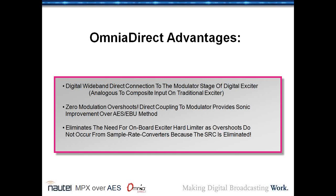Most of our customers would keep the multiplex signal in the Omnia in analog, go into the exciter via BNC or RG-58, and then the exciter goes A-to-D back into the digital world — one more stage of conversion. And that RG-58 is in an extremely noisy environment: ground loops, RF fields, magnetic fields. It doesn't take much to destroy your signal-to-noise ratio when you're talking about the kind of performance that most transmitters have today.